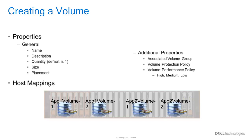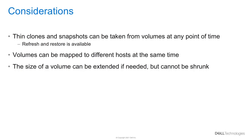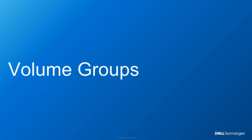The performance policy determines how many resources the volume will receive if the processing power of the system becomes fully utilized. This is a relative ranking, so resources with a high value receive more than those with a medium value, which receive more than those with a low value. This distribution only happens if the system becomes fully utilized; otherwise there is no difference between resources with different performance policies. Users can also select the host to map the volumes to, either at creation time or later. You can take a thin clone or a snapshot, map one or multiple hosts to a volume, and the volume size can be extended after creation, though it cannot be shrunk.